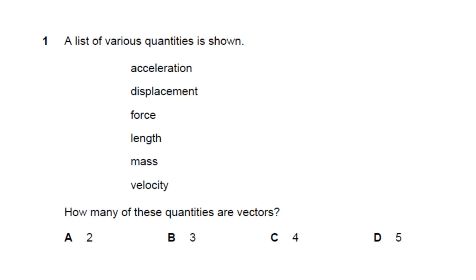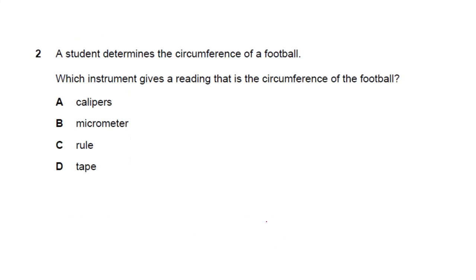The first question shows a list of various quantities and asks how many are vectors. The quantities are acceleration, displacement, force, length, mass, and velocity. Acceleration — yes, vector. Displacement — yes, vector. Force — yes, vector. Length — no, scalar. Mass — no, scalar. Velocity — yes, vector. Total: four. The answer is four.